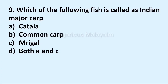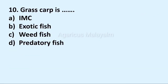Ninth question: which of the following fish is called an Indian major carp? Answer options: option A, catla; option B, common carp; option C, mrigal; option D, both A and C. Correct answer: option D, both A and C. Tenth question: grass carp is classified as? Answer options: option A, IMC; option B, exotic fish; option C, wheat fish; option D, predatory fish. Correct answer: option B, exotic fish.